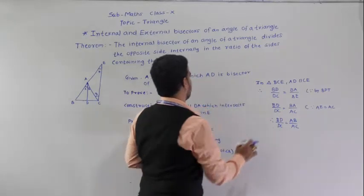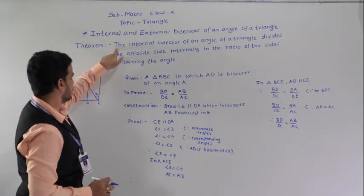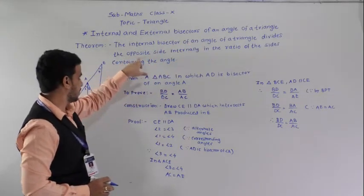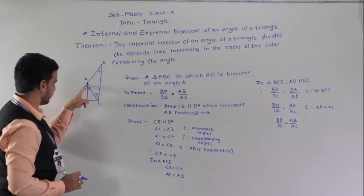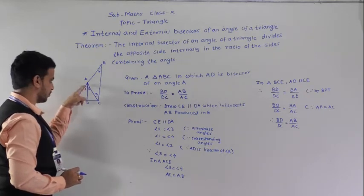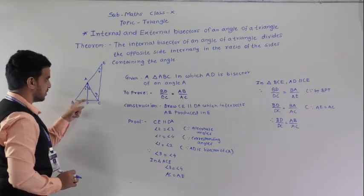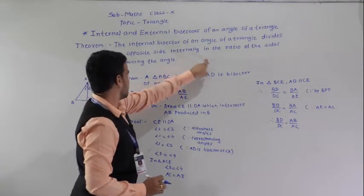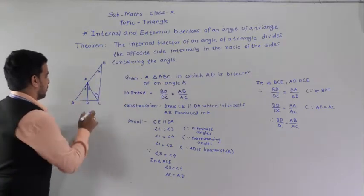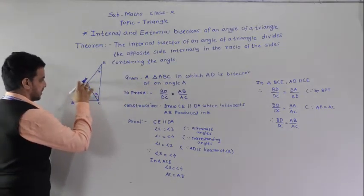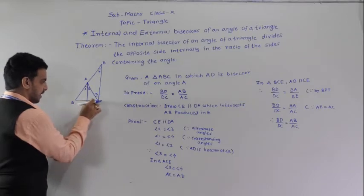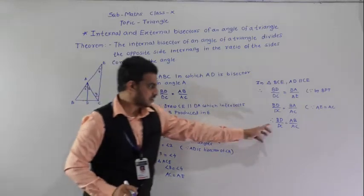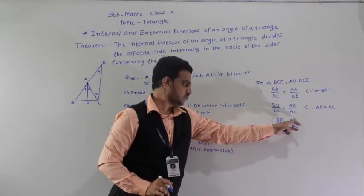Hence proved. The internal bisector of an angle of a triangle divides the opposite side — here angle A — so AD is the bisector of angle A, and AD divides the opposite side internally in the ratio BD by DC equals AB by AC, where AB and AC are the two sides containing angle A.